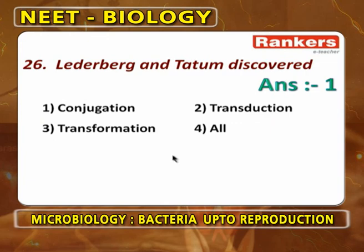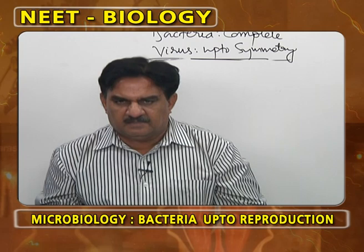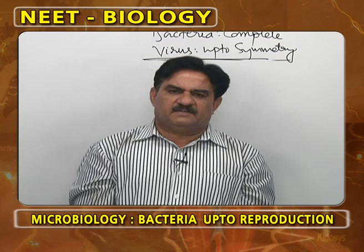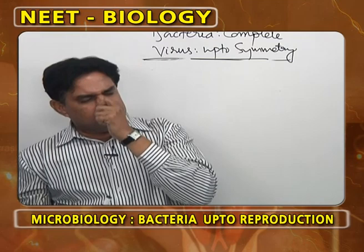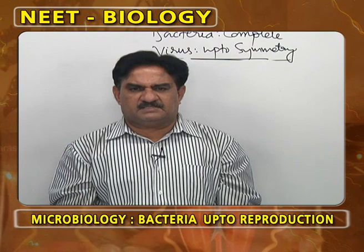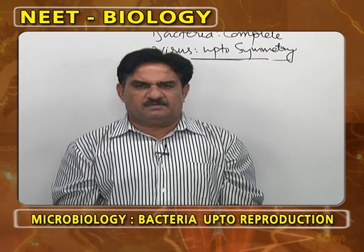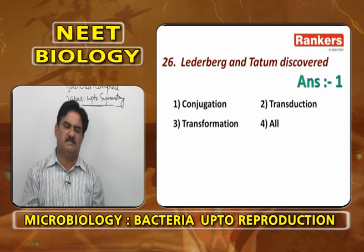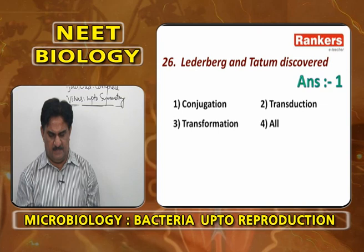Lederberg and Tatum discovered conjugation in bacteria, particularly in Escherichia coli. In conjugation, F-plus (donor) carries a plasmid which replicates and passes through the sex pili conjugation canal into the F-minus (recipient) cell, converting it to male. In transformation and transduction there is no physical contact; only conjugation involves physical contact between bacteria.